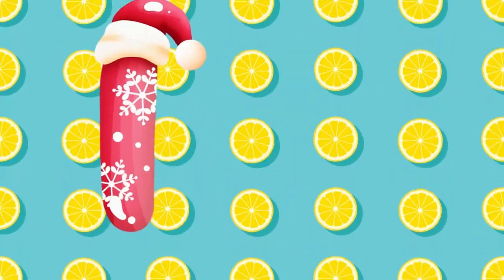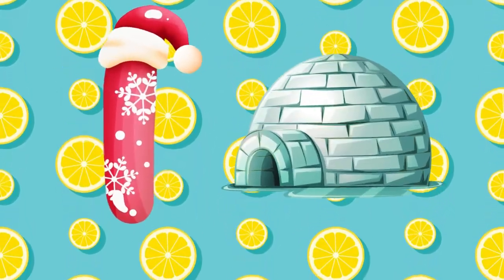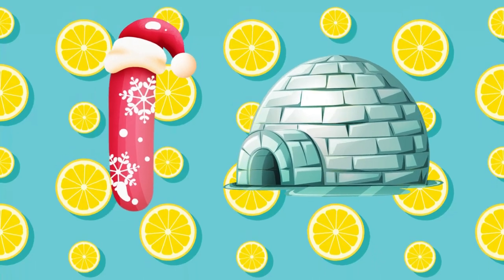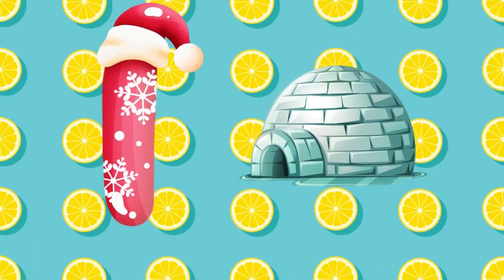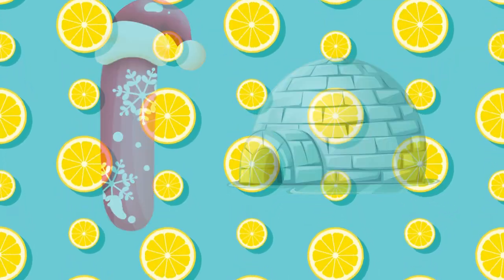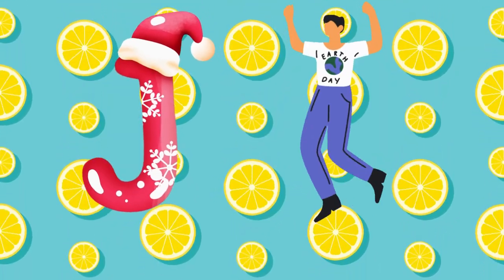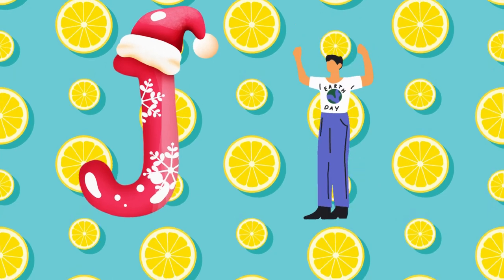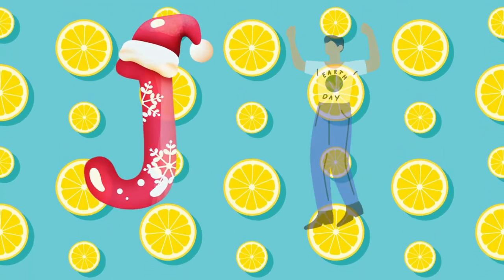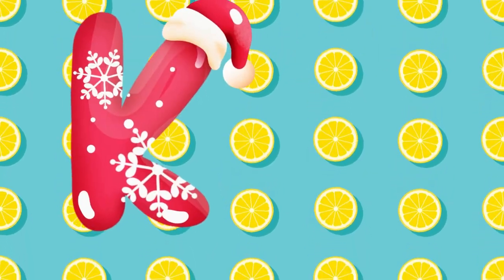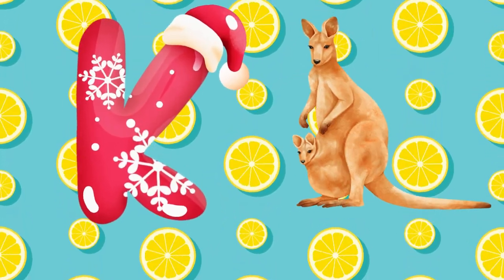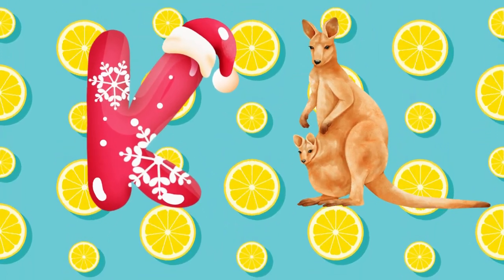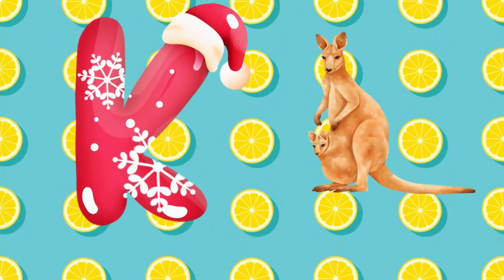I is for igloo, i-i-igloo. J is for jump, j-j-jump. K is for kangaroo, k-k-kangaroo.